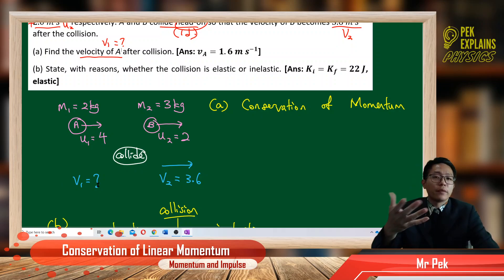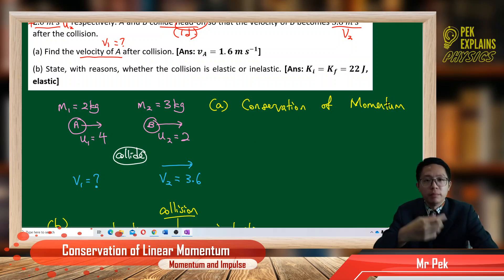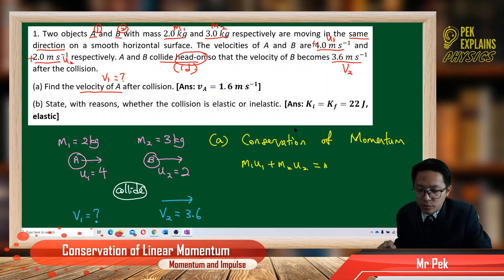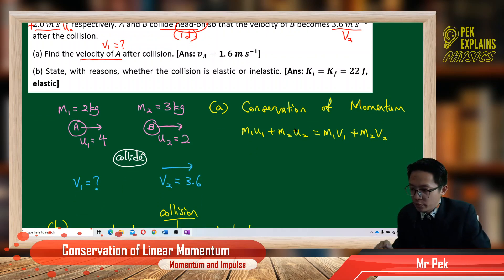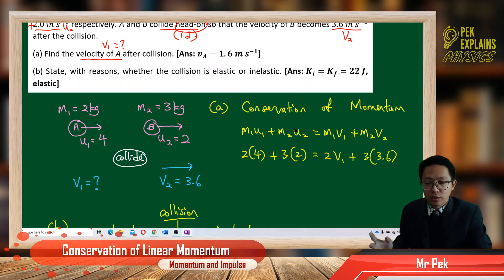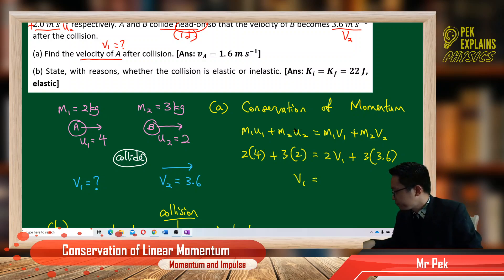What principle can we use? It's the conservation of momentum. For collision, conservation of momentum always applies. The formula for conservation of momentum is: M1U1 + M2U2 = M1V1 + M2V2. We substitute all the information we have: 2×4 + 3×2 on the left side. We don't have V1 — we want to find V1. We calculate and we get positive 1.6 m/s.